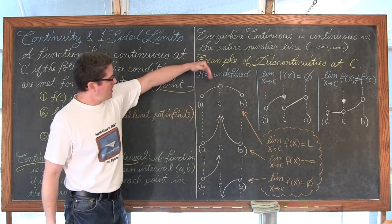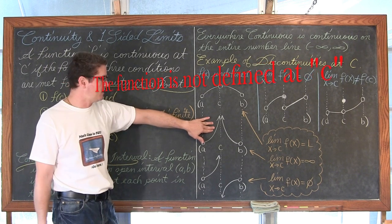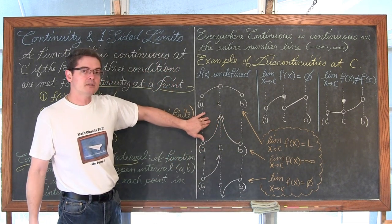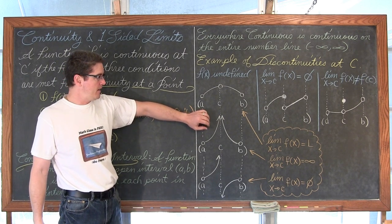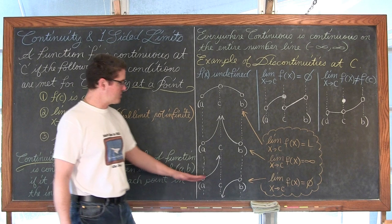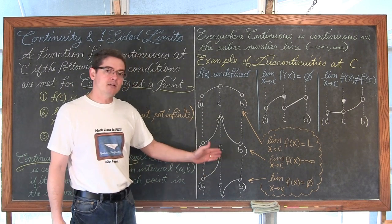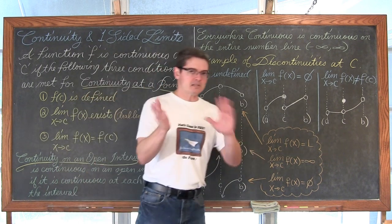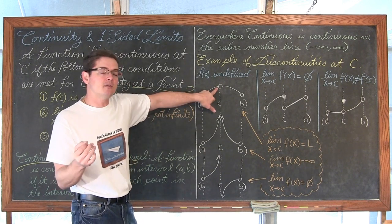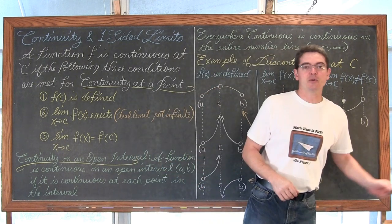Looking back: this function has no real limit at c, and when the graph approaches positive infinity from both sides, that gives an infinite limit. For a vertical asymptote where the graph approaches positive infinity from the left and negative infinity from the right, there is no limit at all — not even an infinite one. Holes are going to be defined as removable discontinuities, and asymptotes or sharp breaks are called non-removable discontinuities.